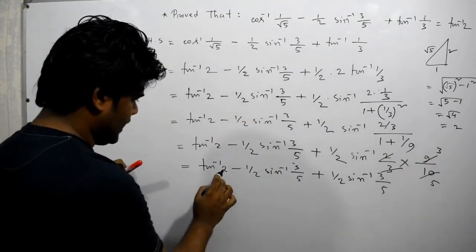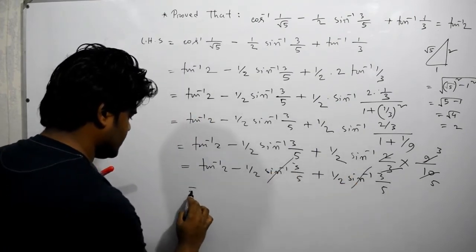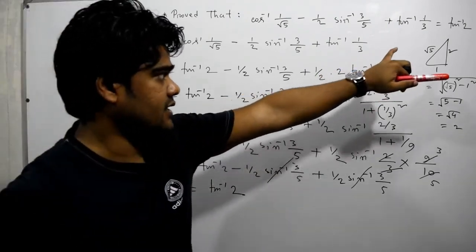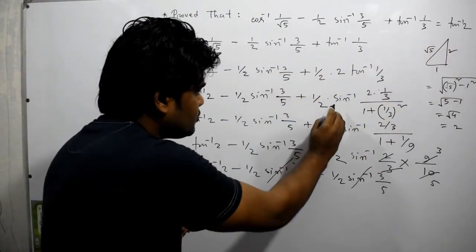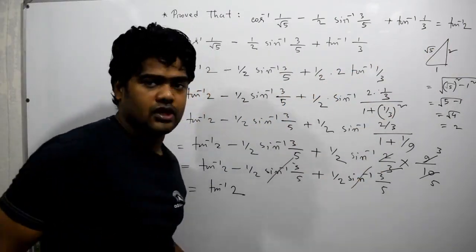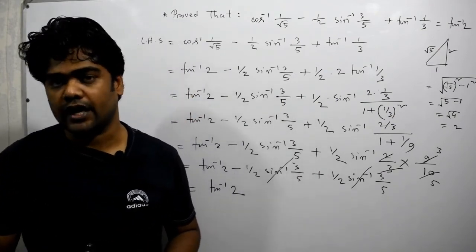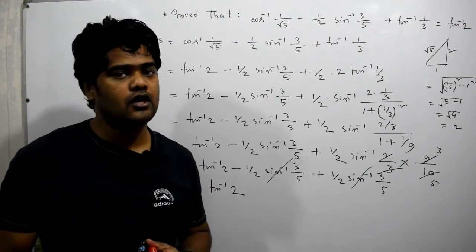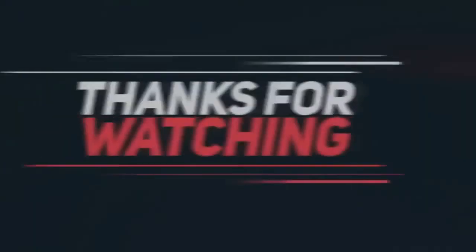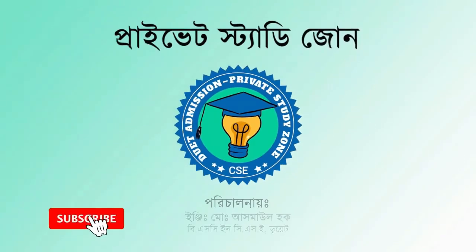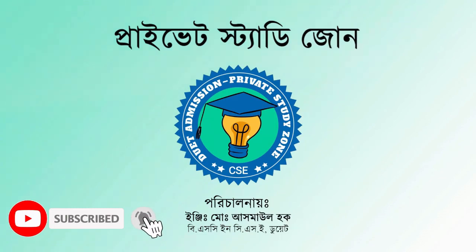So this is half sine inverse 3 by 5. This is the most important result — this is half sine inverse 3 by 5, which is our final answer.